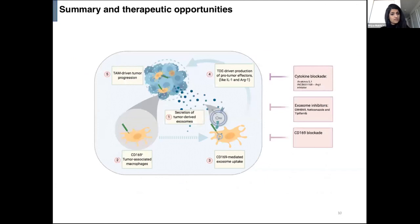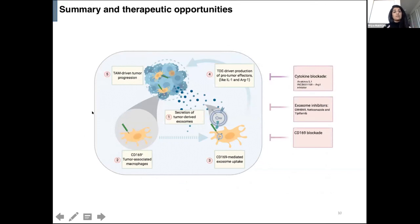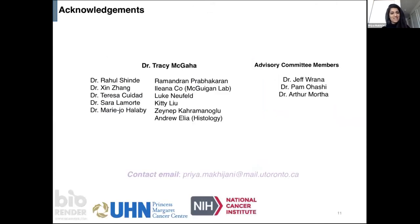In conclusion, CD169 is required for the uptake of tumor-derived exosomes, and this response to exosomes can have pro-tumor effects, including the production of IL-1 and arginase that leads to TAM-driven tumor progression. There are many therapeutic opportunities: cytokine blockade of IL-1, arginase inhibition already in the clinic for other cancers, preclinical modeling of exosome inhibitors, and unique to this work, CD169 blockade — already being investigated by some groups to reprogram the CD169-positive macrophage. Thank you all for listening.